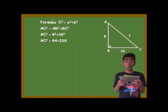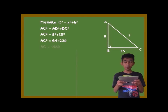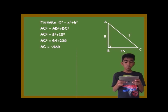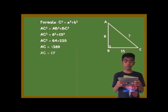To find AC, we need to take the square root of the sum of 64 and 225, which is equal to the square root of 289, or 17.